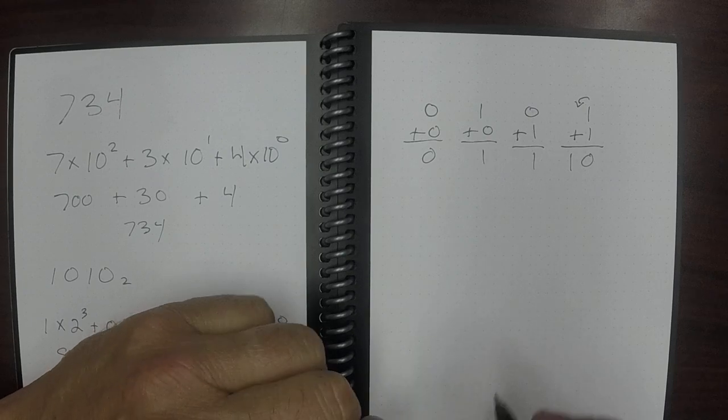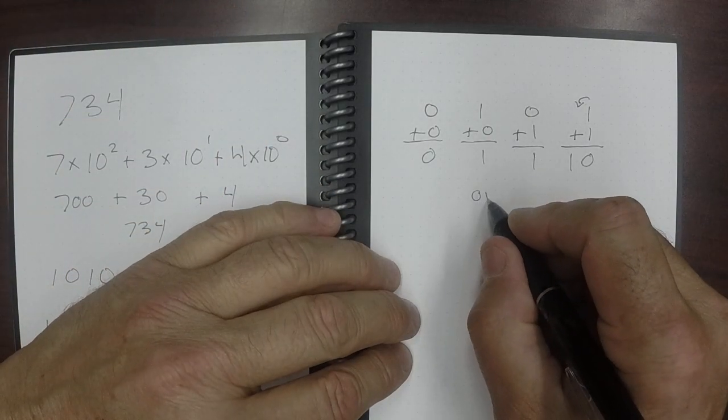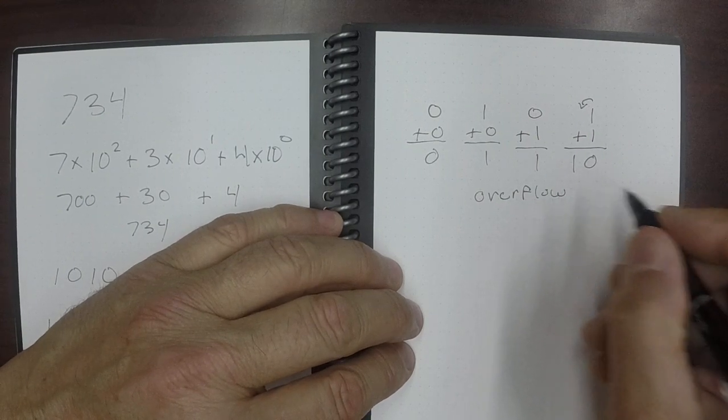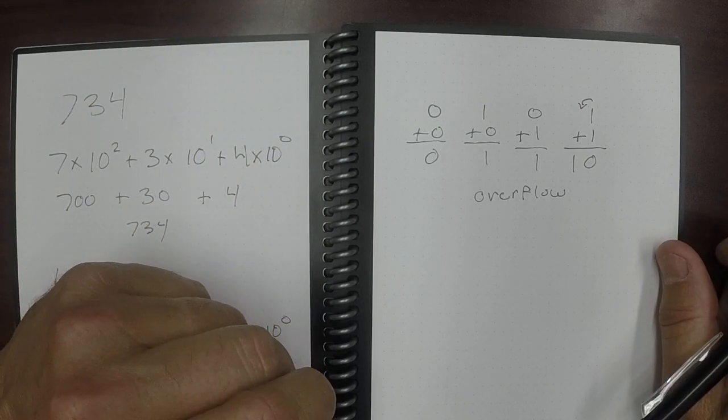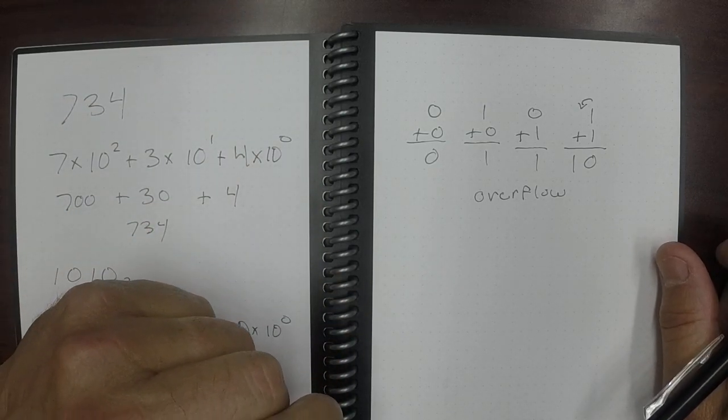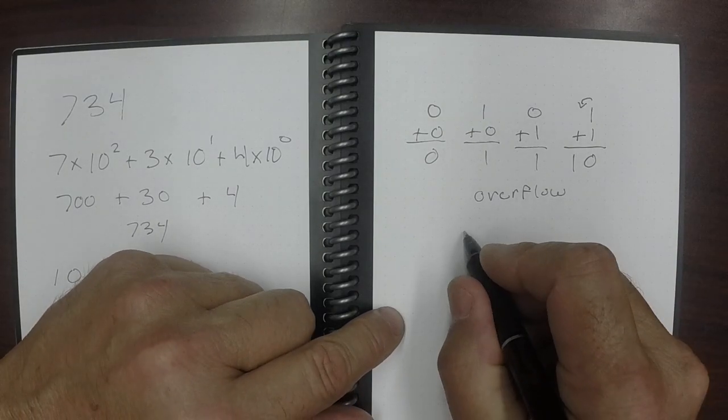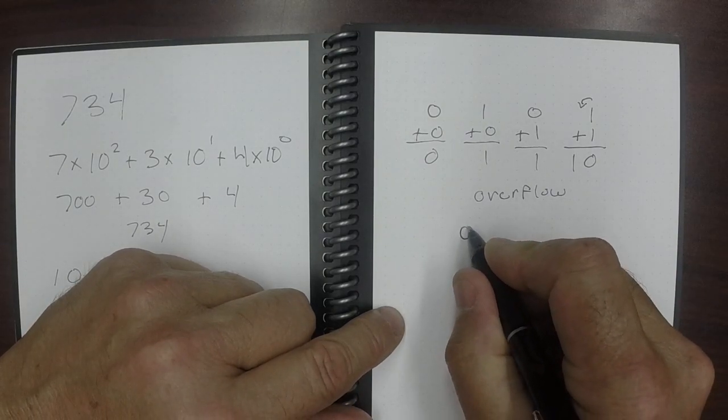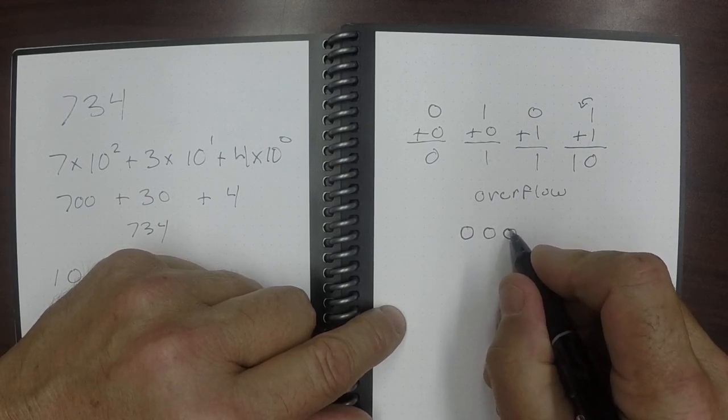Now we're going to talk about binary addition in larger numbers and in particular overflow. Overflow occurs whenever we have two numbers with the same sign and the sign bit changes. Let me show you what I mean. Let me do one first that doesn't overflow. Remember when I'm doing this that the leftmost bit is the sign bit. It represents whether it is a negative or positive number.